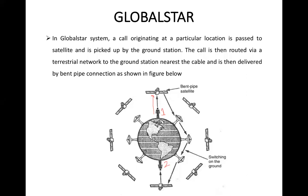From that satellite, the signal will be transmitted to the nearest ground station. Then the system will use the terrestrial model — that is, base station to base station. The signal will then be transmitted to the satellite to which user number two or the receiver is connected. In this way, the data is transmitted from one user to the other, using both satellites and ground stations with terrestrial communication.